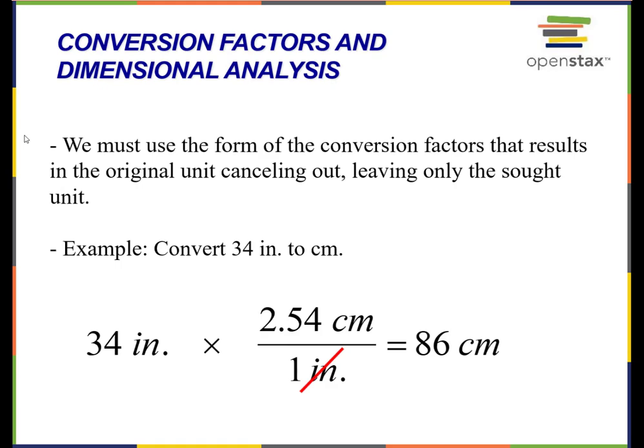Depending on what the situation calls for and the number we're given and what we're trying to convert into, we can use either conversion factor — 2.54 centimeters over one inch, or one inch over 2.54 centimeters. Let's look at the problem: convert 34 inches to centimeters. We're given a value in inches and asked to convert to centimeters. So: 34 inches × (2.54 centimeters / 1 inch) = 86 centimeters. The inches are crossed out — both cancel out.